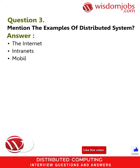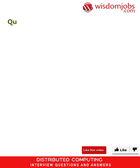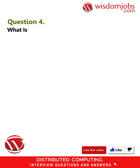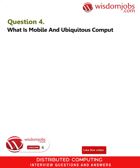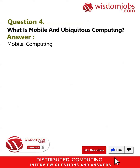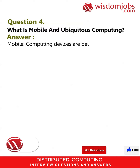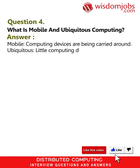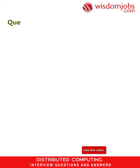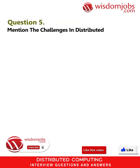Question 3: Mention the examples of distributed system. Answer: The internet, intranets, mobile and ubiquitous computing. Question 4: What is mobile and ubiquitous computing? Answer: Mobile computing devices are being carried around. Ubiquitous computing devices are all over the place.